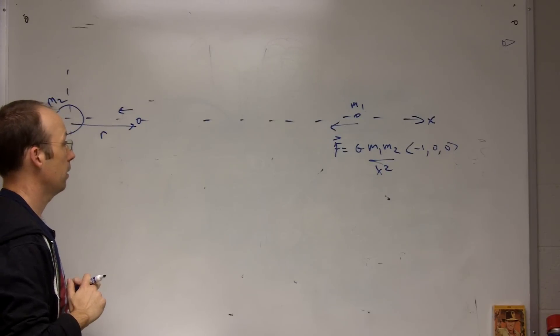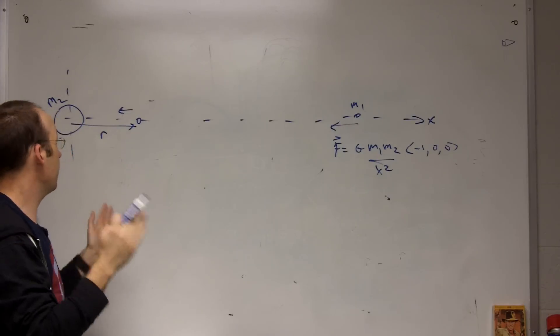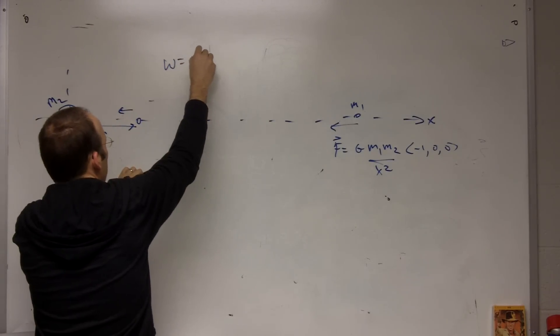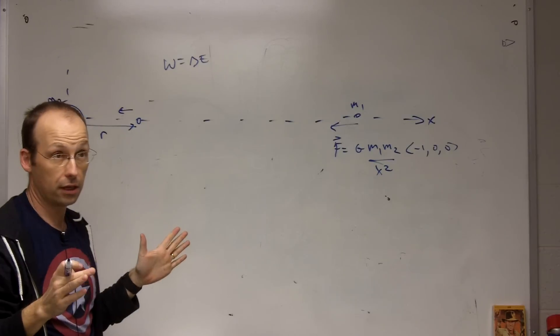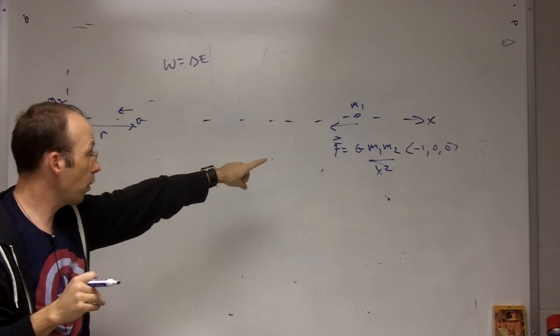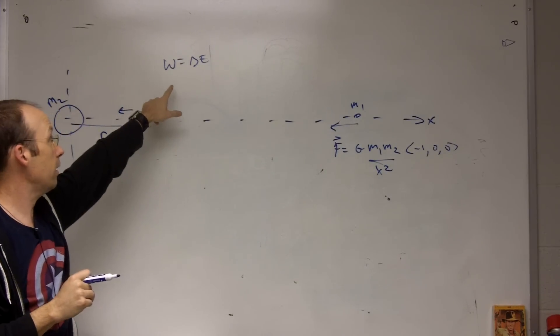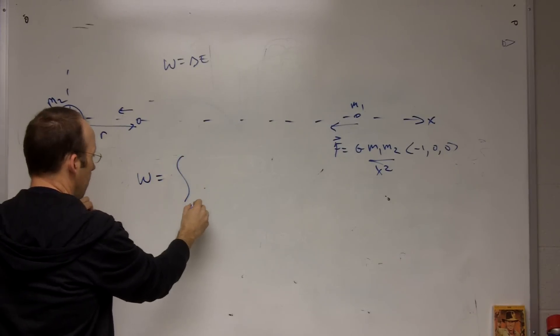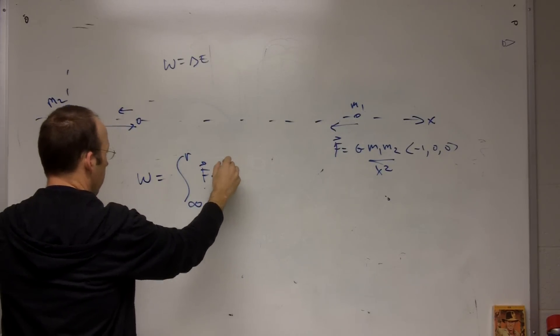Now I can use the work energy principle because I'm given a distance. But I could say work equals a change in energy and in this case I only have kinetic energy for the change in energy. I could do that. But the problem is that the force is not constant. As I get closer, the force gets bigger. So I'm going to have to integrate to find the work. So I'm going to say work equals the integral from infinity to r of f dot dr.